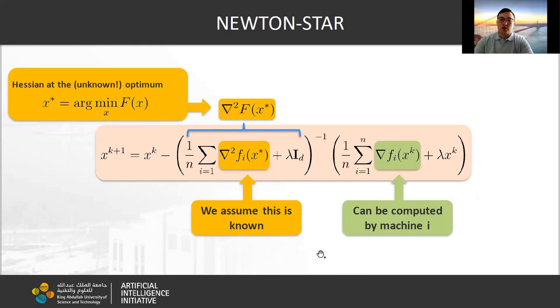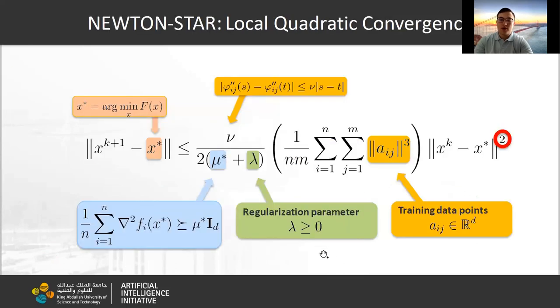Our first contribution is Newton-star. The only difference with standard Newton method is that we use the Hessian at the optimum instead of the Hessian at current point. It means that each node computes only local gradient and broadcasts them to the master. We have proved local quadratic convergence rate for this algorithm.